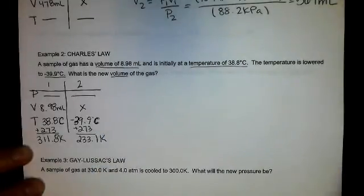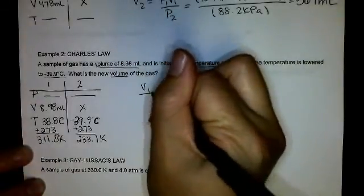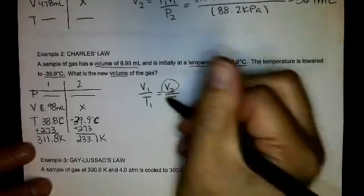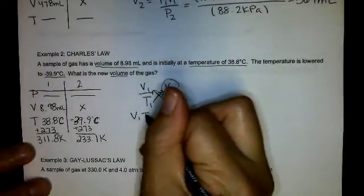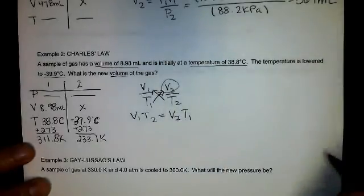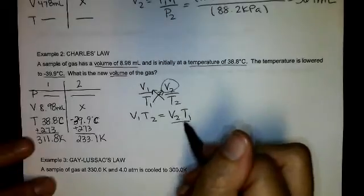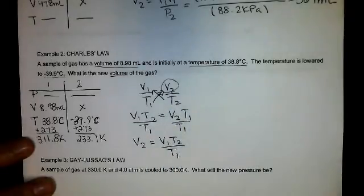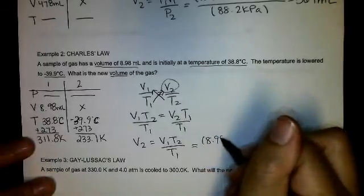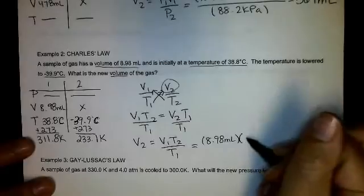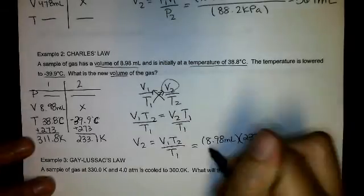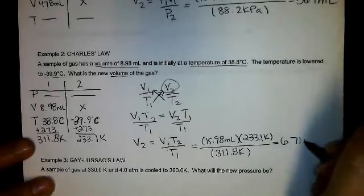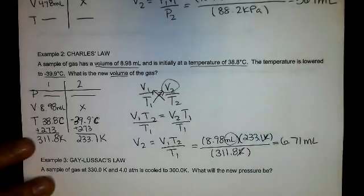Using V1/T1 = V2/T2, cross-multiply to get V1·T2 = V2·T1, then divide by T1. So V2 = V1·T2/T1 = (8.98 mL × 233.1 K) / 311.8 K = 6.71 mL. The Kelvin units cancel, leaving milliliters.